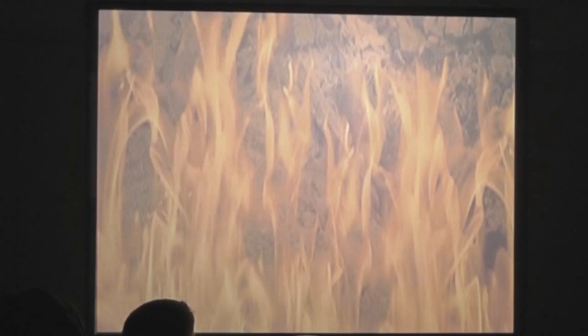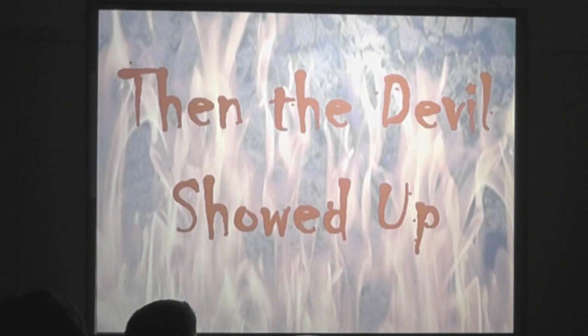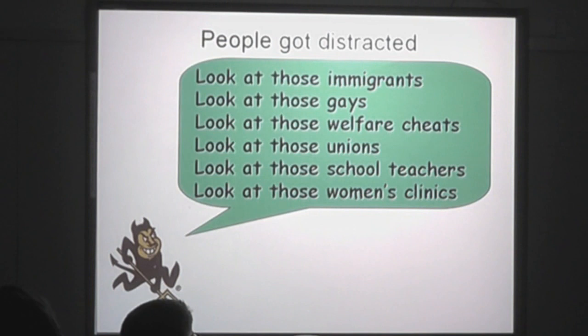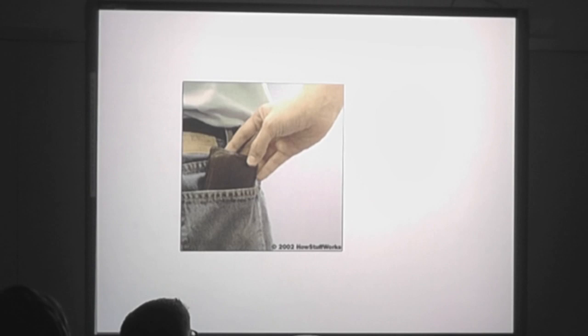Corporations borrowed, government borrowed, investors borrowed, families borrowed. People got distracted in the middle of all of this. Instead of focusing on the economic problem, it was: look at those immigrants, look at those gays, welfare cheats, unions, school teachers, women's clinics. And while they were distracted, their pockets were being picked.